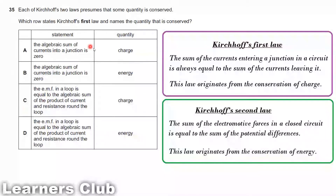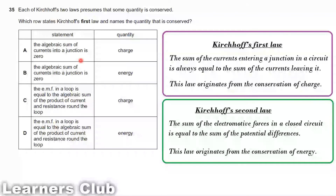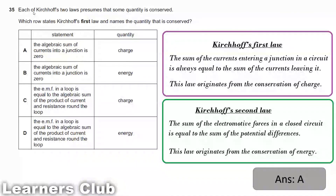The algebraic sum of currents at a junction is zero. Current entering the junction is taken as positive and current leaving as negative, so when summed the algebraic result is zero. This relates to conservation of charge. Therefore the answer is option A.